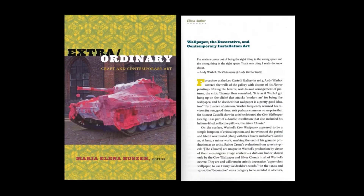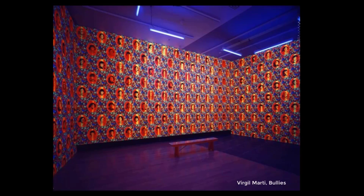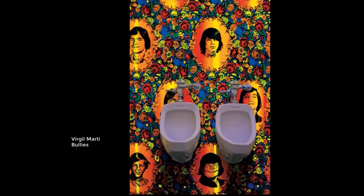Another reading that I find useful is the essay 'Wallpaper, the Decorative and Contemporary Installation Art' by Alyssa Author, which is a chapter in the book Extraordinary: Craft and Contemporary Art. This essay talks about how queer artists Andy Warhol, Robert Gober, and Virgil Marty used wallpaper to probe various aspects of identity and sexuality, while celebrating decoration and transgressing the boundaries of fine art. The author discusses Virgil Marty's wallpaper titled Bullies, in which Marty inserted the yearbook photos of tough boys he both feared and desired in junior high school. The black velvet surface and psychedelic effects he used relate back to interior designs from the 1970s, and his low-brow aesthetic is intended to push back against the dominant tastes and attitudes of heterosexual culture. This also gives us an opportunity to talk about where this wallpaper exists and how the location can alter the meaning.